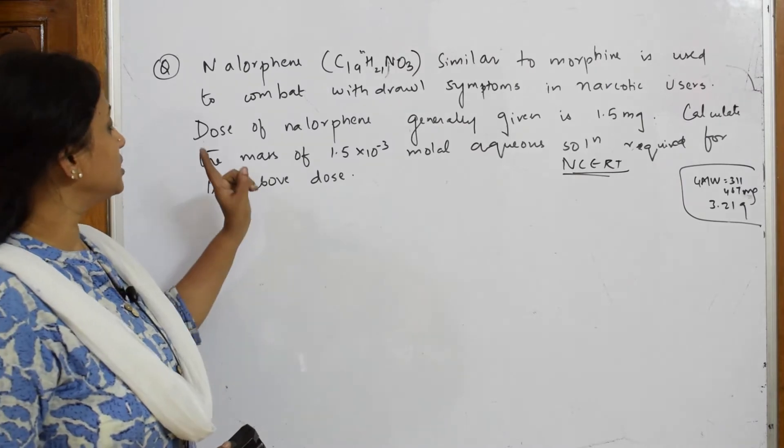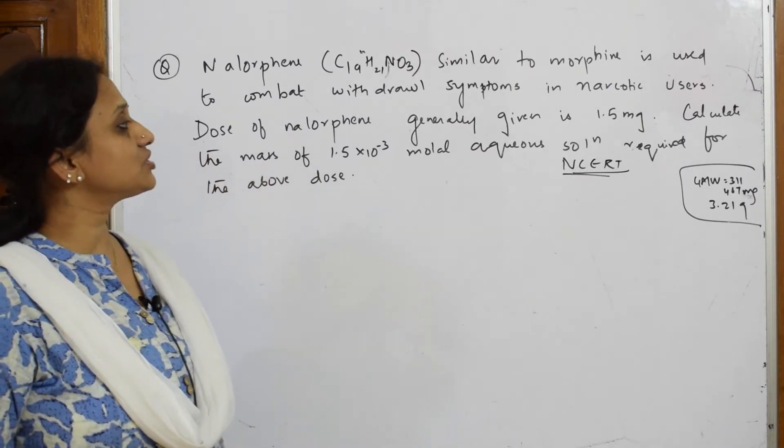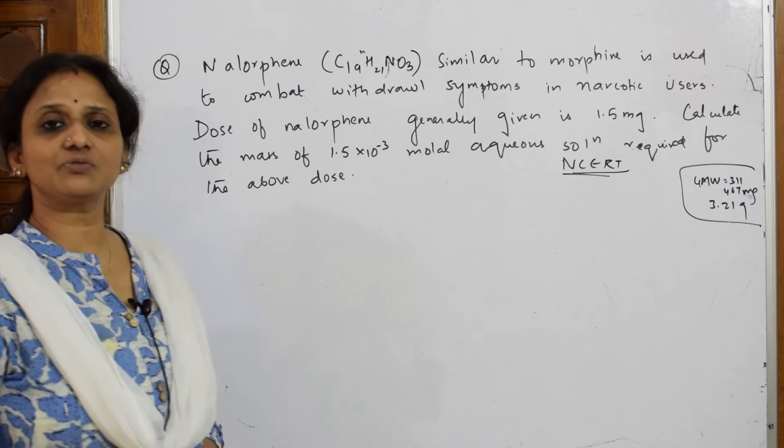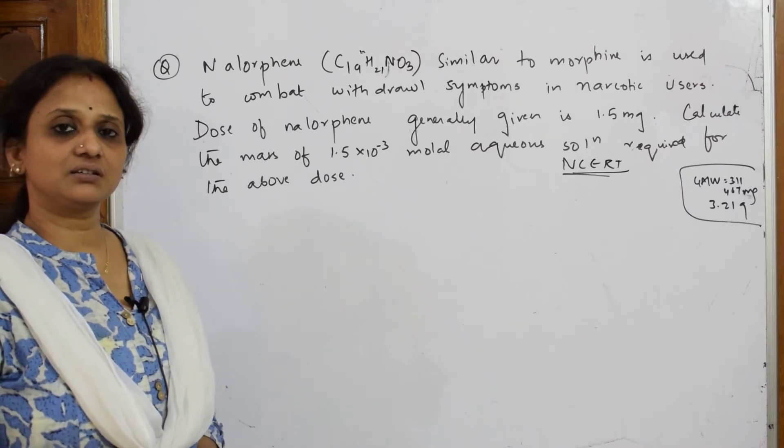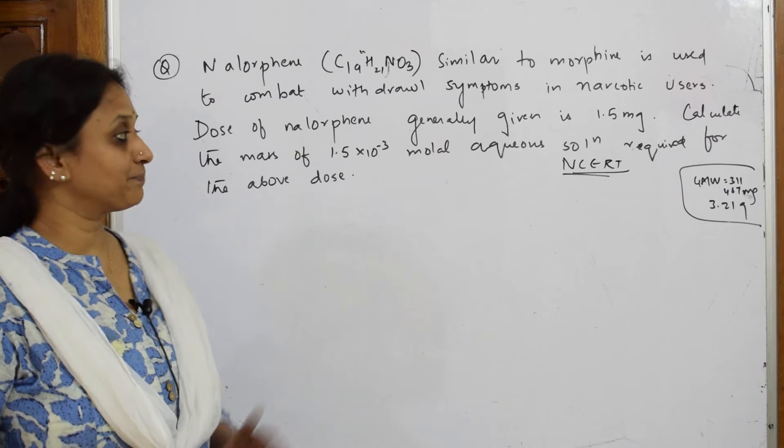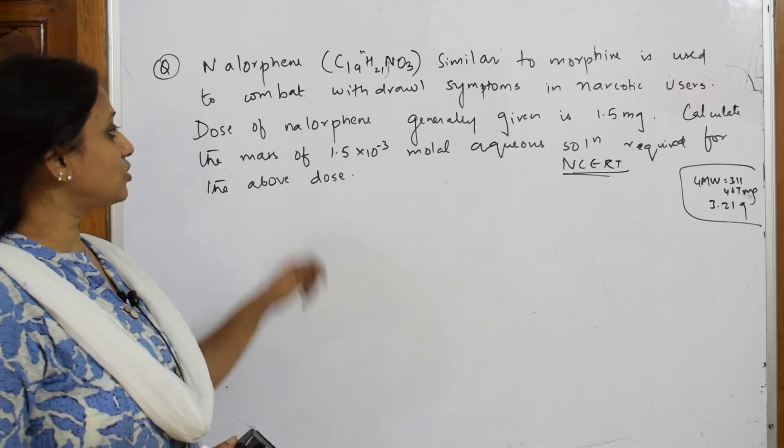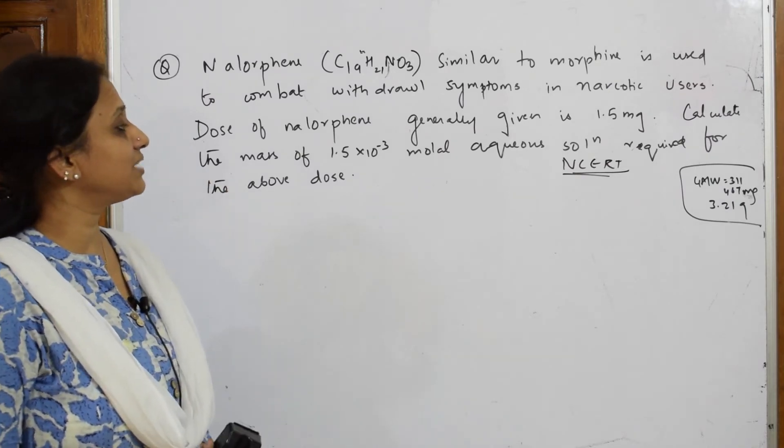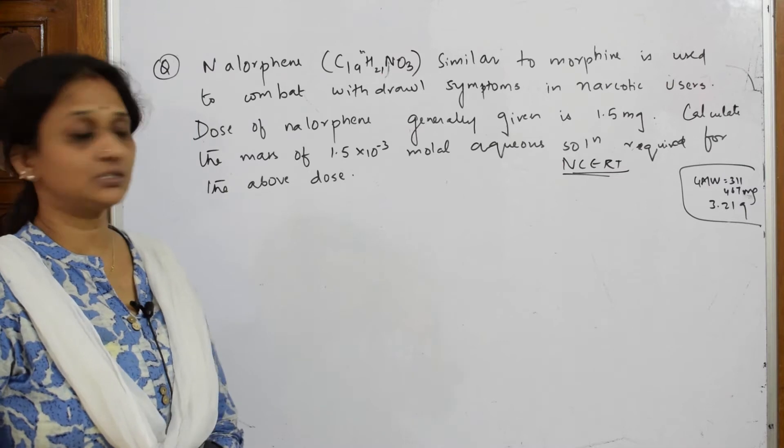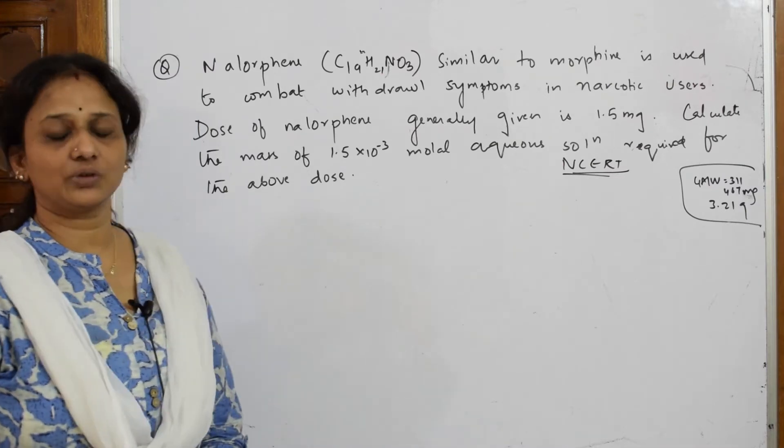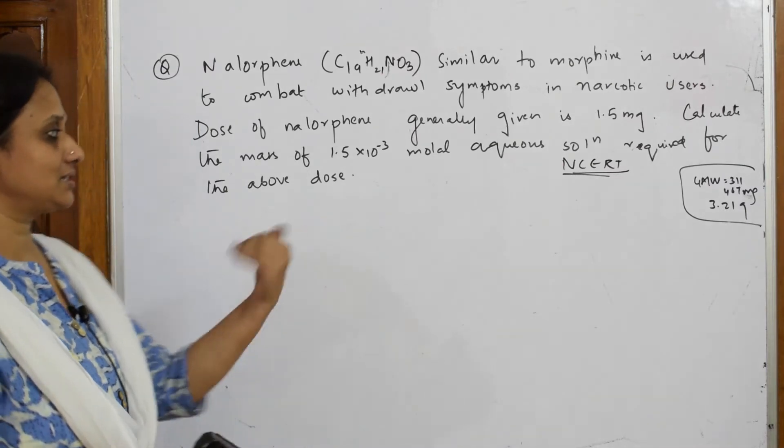The dose generally given is 1.5 milligrams. Calculate the mass of 1.5×10^-3 molar aqueous solution required for the above dose. Let's try to solve it step by step.